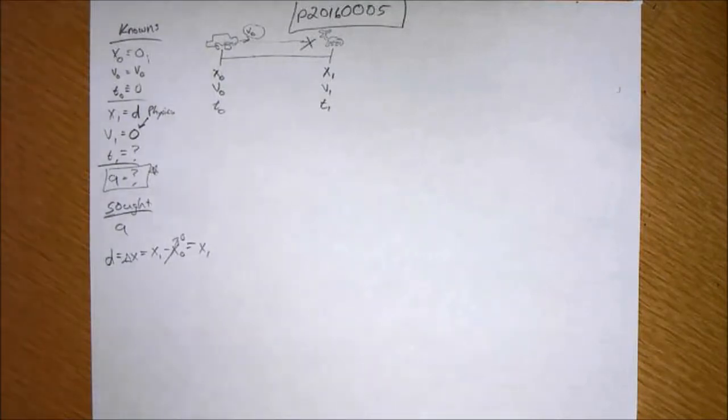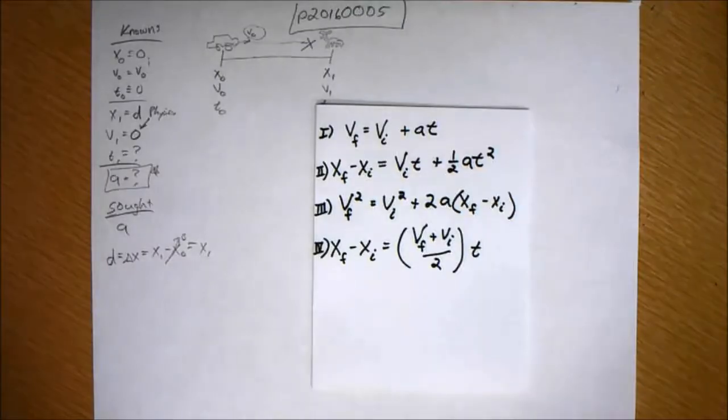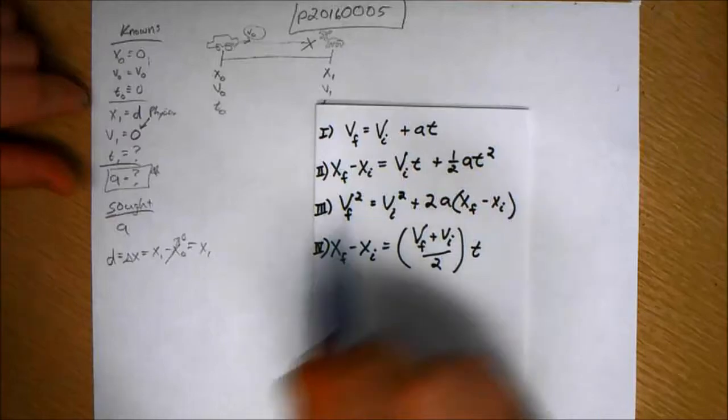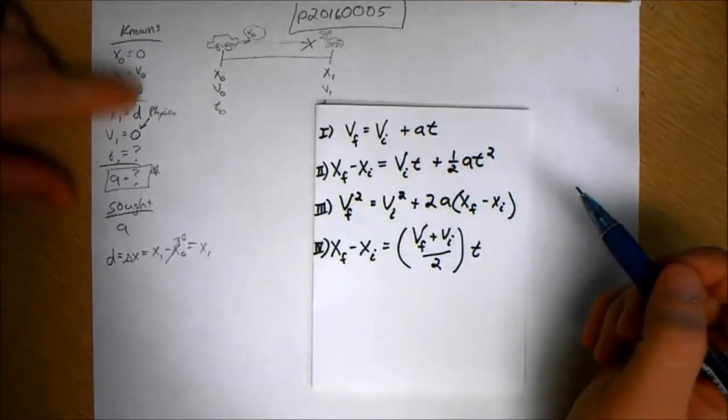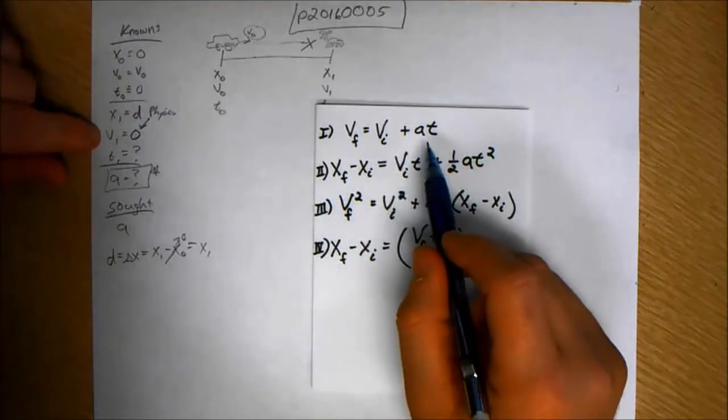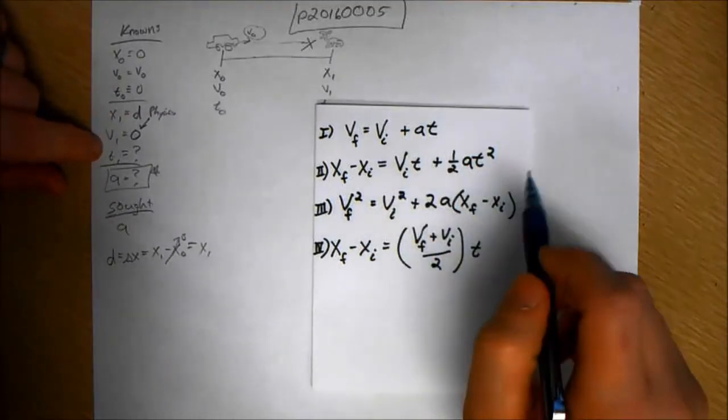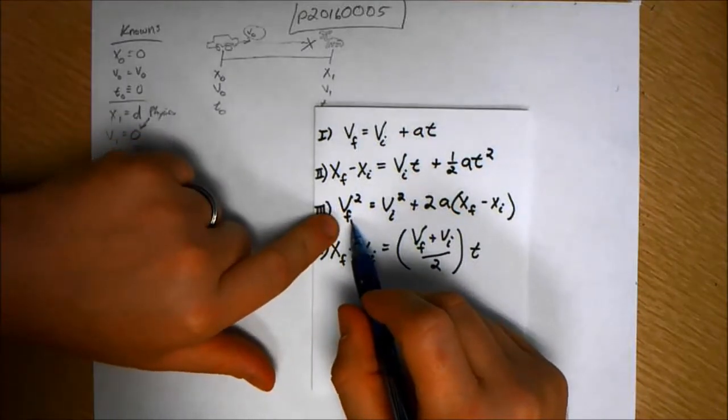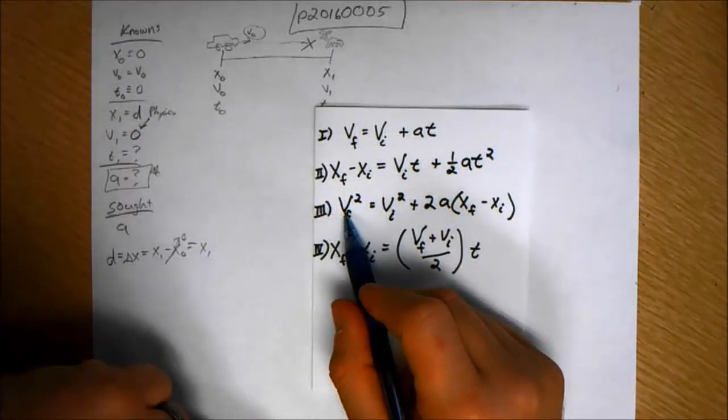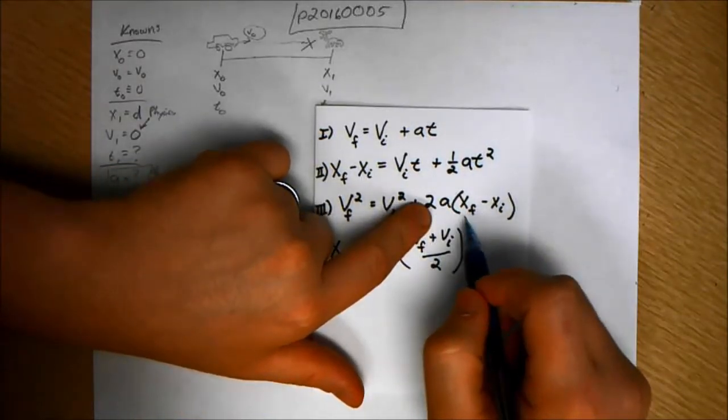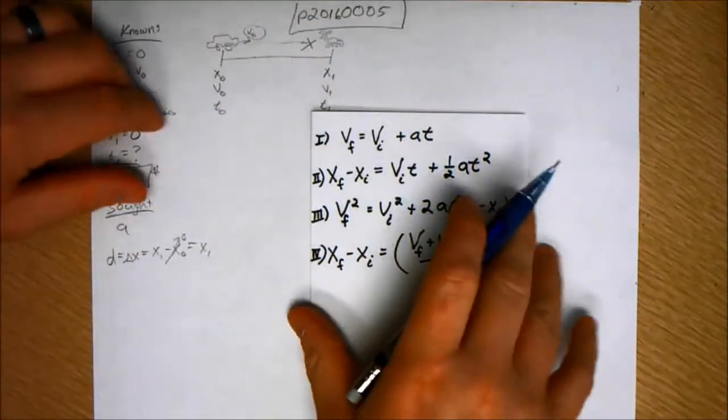So pull out our kinematic equations. I have D. I have V-naught, which is going to be VI, the initial velocity here. So, let's see. We don't have time, and we're looking for A. Okay, so this equation here gives us the final velocity, which is V-one, which is zero, the initial velocity, which we have, and we have the distance. All right, so let's use that one.